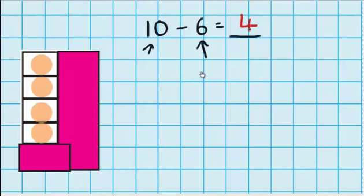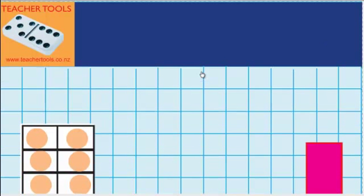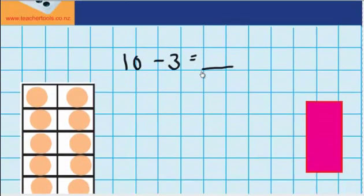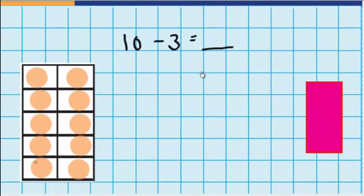Let's try another one. Let's imagine I've got 10 tennis balls, and I lose 3 of them. I want to work out, how many tennis balls do I have left? Well, down here I've got my 10s frame, and you can see I've already filled it up with 10 counters. So that's representing the 10 tennis balls.